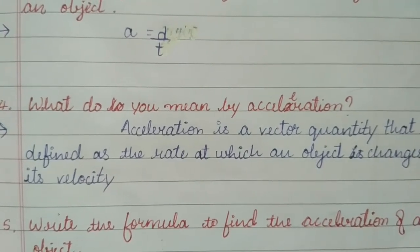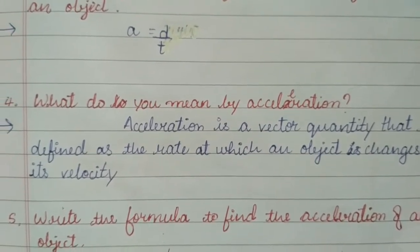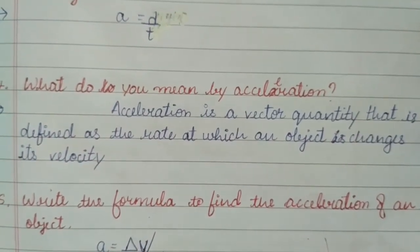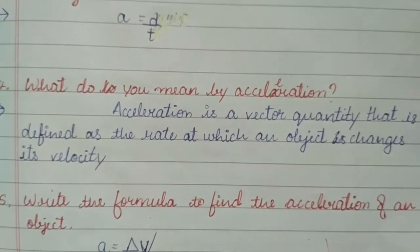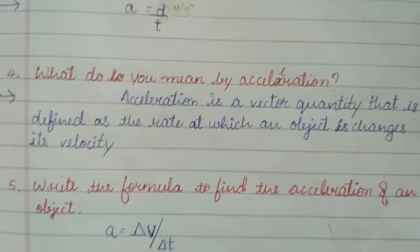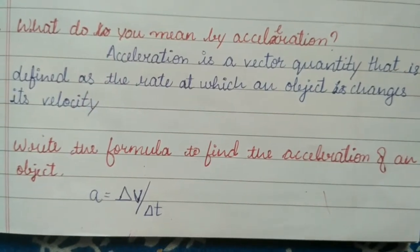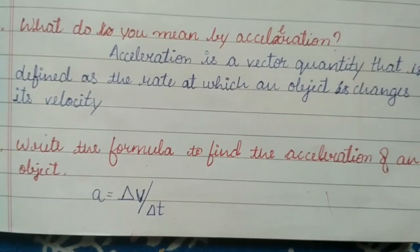What do you mean by acceleration? Answer: acceleration is a vector quantity that is defined as the rate at which an object changes its velocity. Write the formula to find the acceleration of an object: a is equal to delta v divided by delta t.